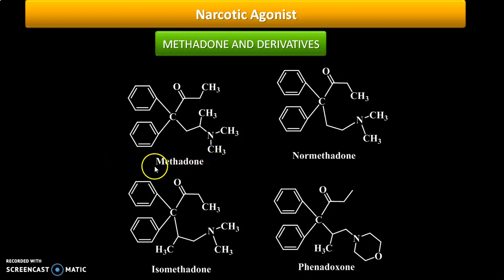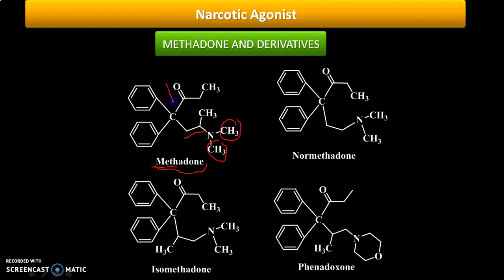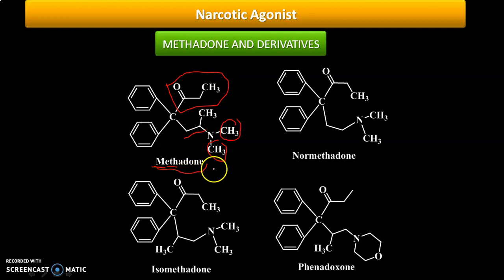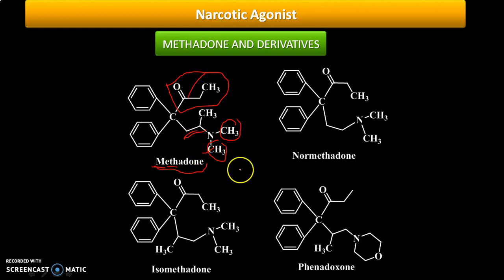How to remember the structure of methadone: the word itself indicates its components. 'Meth' stands for methyl — a methyl group is present. 'Eth' indicates an ethyl linkage. And 'done' refers to the propanone side chain — 'prop-a-none' gives us 'done.' So: meth + eth + done = methadone. That is how you remember the structure of methadone.